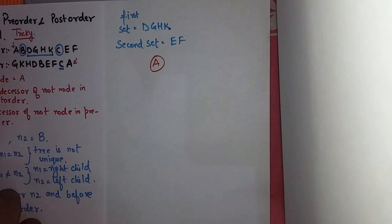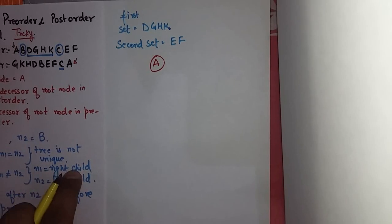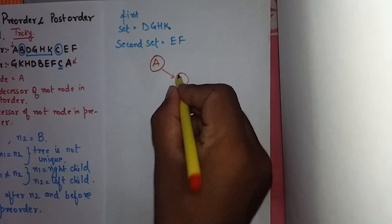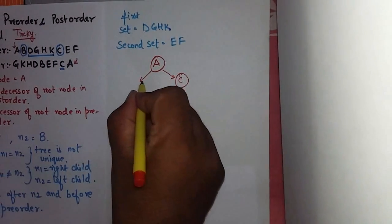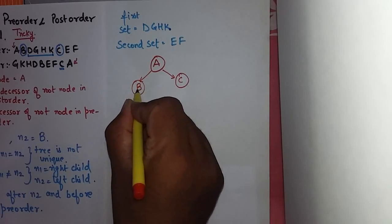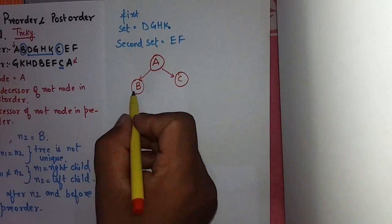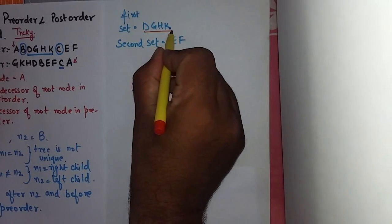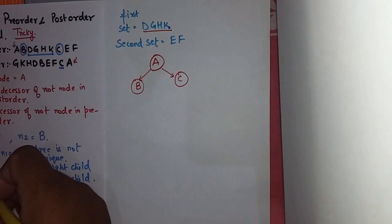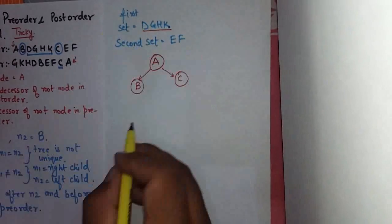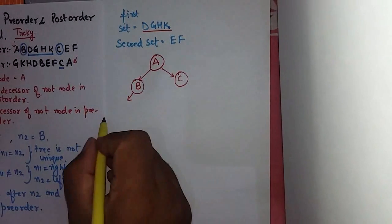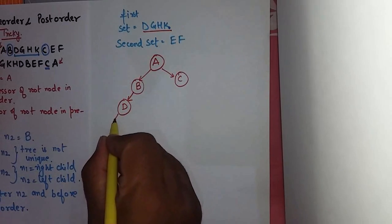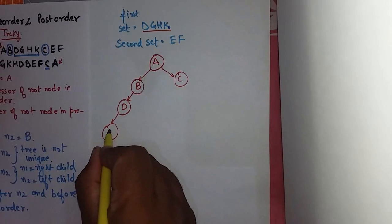What we have found is N1 is the right child, so C is the right child, and N2 is left child, B is left child. And first set after B is DGHK. After solving the same thing for this particular set we will get the tree as like this.